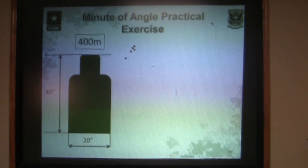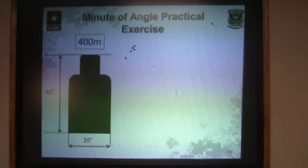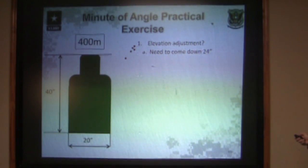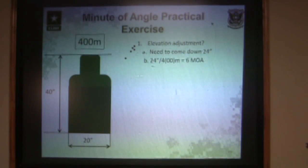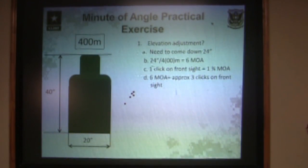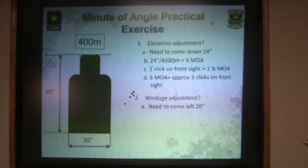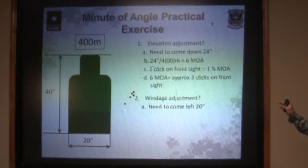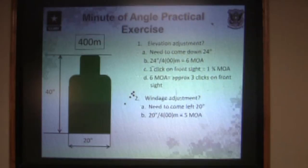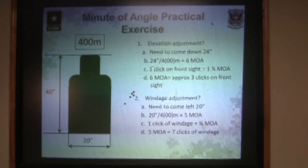Another target — we need to come down and left, so we have to adjust both elevation and windage. The target is 40 inches tall and 20 inches wide. We need to move our group about 24 inches down. Twenty-four inches at 400 meters gives us six minutes of angle. Each click on the front sight post is worth one and three-quarter minutes, so to move six minutes of angle we need to come down roughly three clicks. For windage, we need to move roughly 20 inches left — the target is 20 inches wide, so center to edge is 10 inches, and we're about 10 inches off the right edge. Twenty inches at 400 meters is five minutes of angle. Each click on the windage sight is worth three-quarters of a minute, so we need to move roughly seven clicks on the rear sight to get the group into the center of the target.